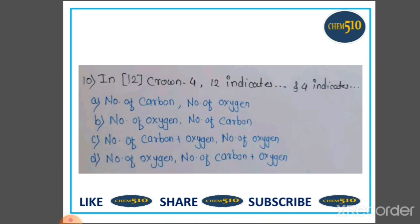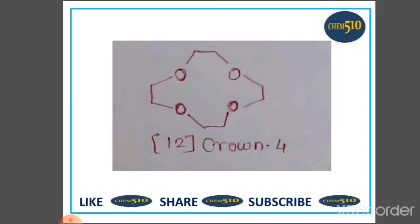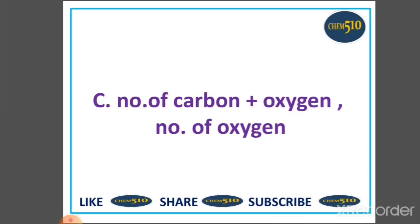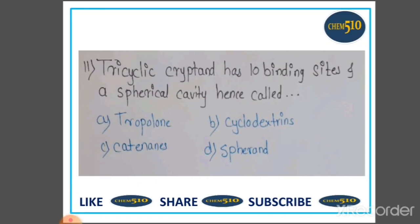In 12-crown-4, 12 indicates the number of carbon plus oxygen atoms, and 4 indicates only the number of oxygen atoms. So option C is correct: 12 indicates number of carbon plus oxygen, and 4 indicates number of oxygen.